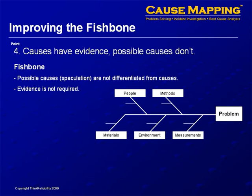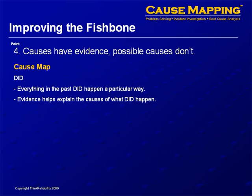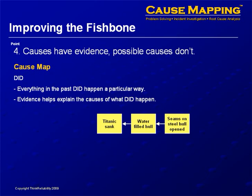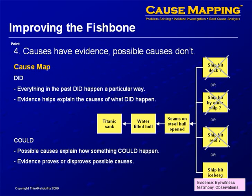The fourth item is that causes have evidence, and possible causes don't. The fishbone allows for a lot of speculation — a lot of people use the term brainstorming, but when you're investigating an incident, you would never really brainstorm the causes. You let evidence drive the investigation. In a cause and effect analysis, you want to identify what did happen. People might speculate and say the seams on the Titanic opened up because the ship hit a dock, but it was in the middle of the ocean. Or that the ship was hit by another ship, but there was no evidence of that. What they know from the evidence is that the ship did actually hit an iceberg. You have to investigate what did actually occur — when people talk about what could have occurred, they're identifying possible causes. It's important to let evidence drive your investigation to minimize the speculation.